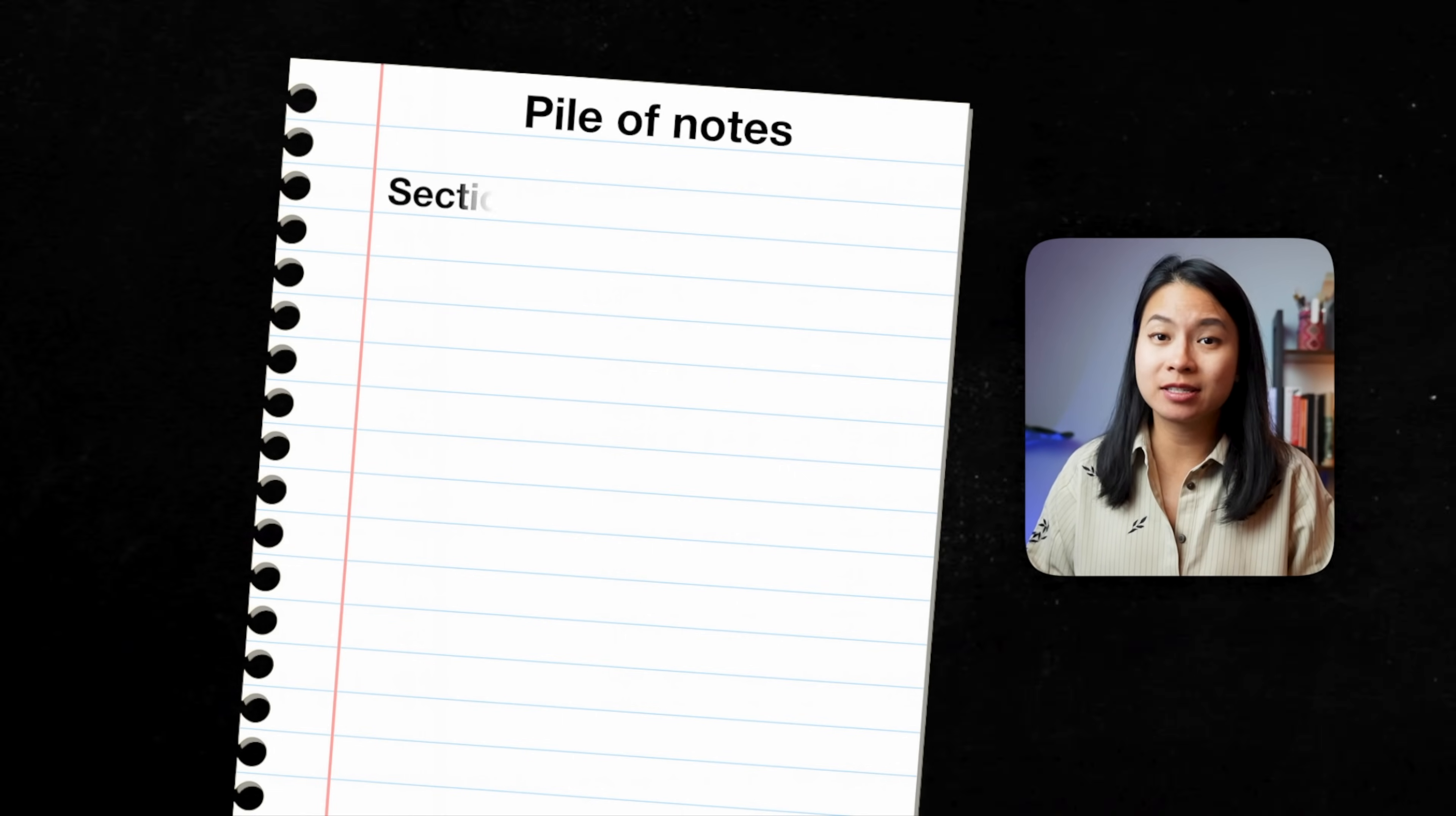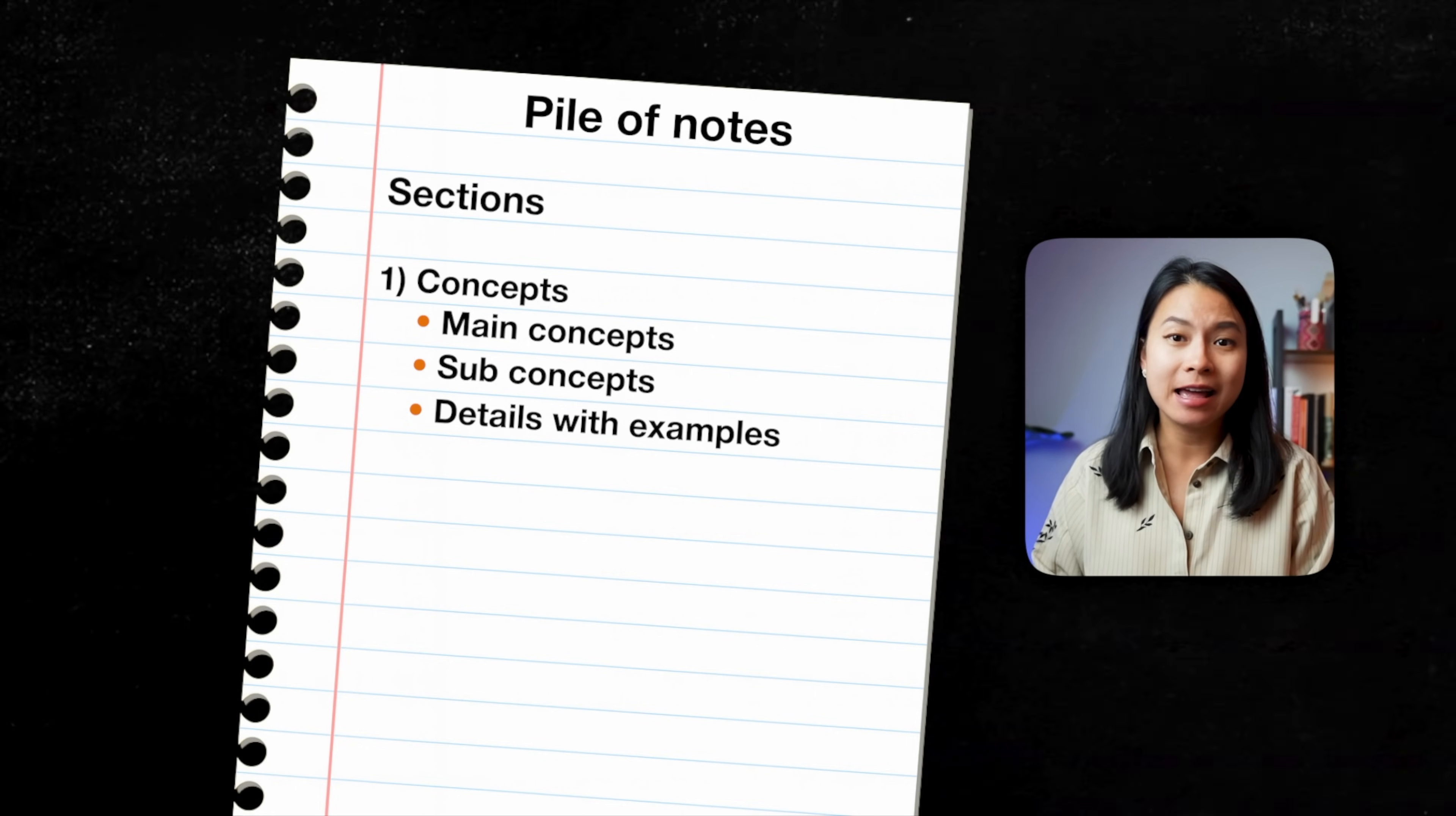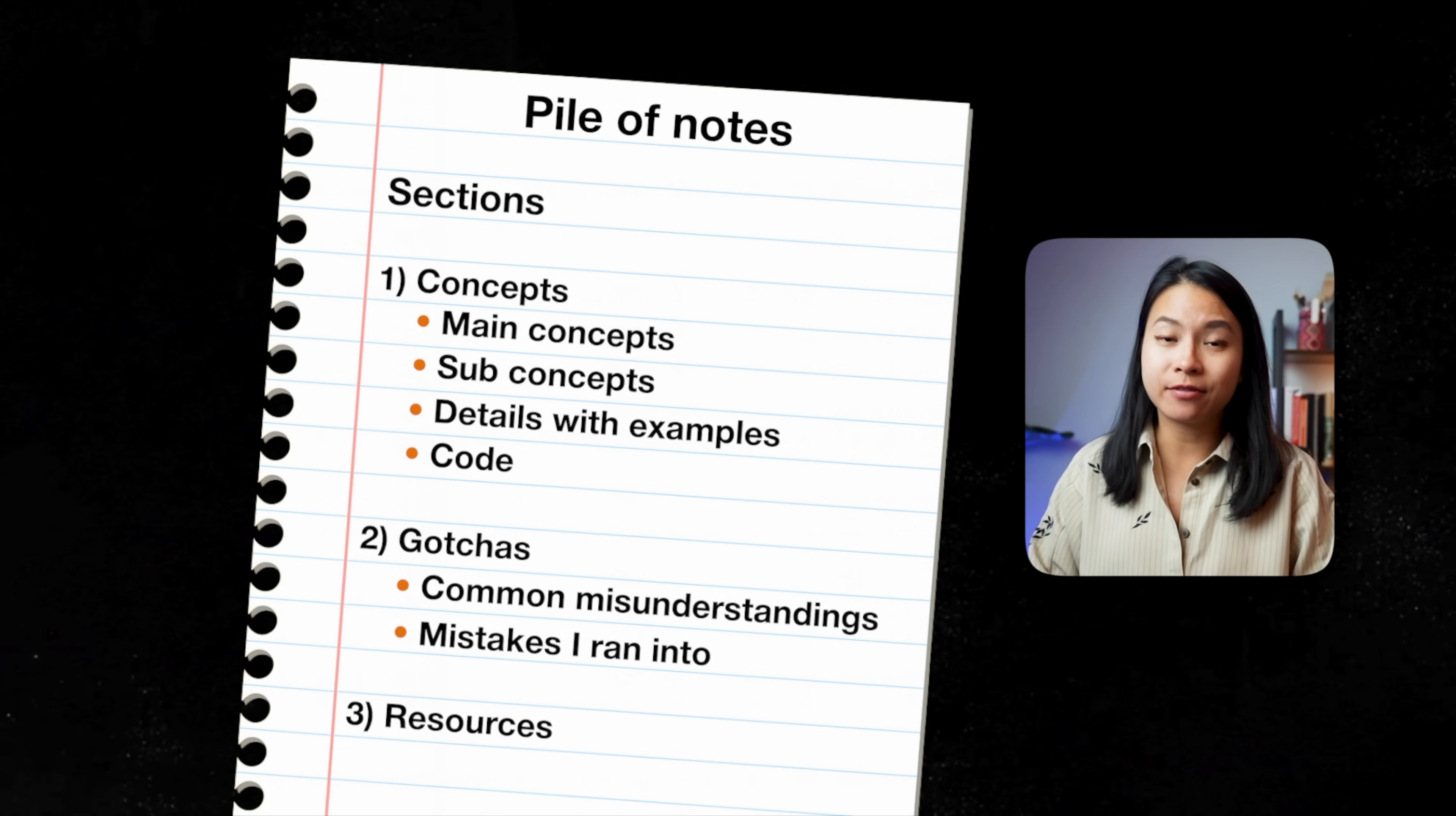I often structure notes into sections. For example, concepts with all the main concepts and the sub-concepts, and then adding some details with examples. Examples are super useful for making things click, and sometimes I also add code if it's helpful. And then I'll add a section for gotchas, the common misunderstandings, or the mistakes I ran into. And finally, I'll list some useful resources for later.